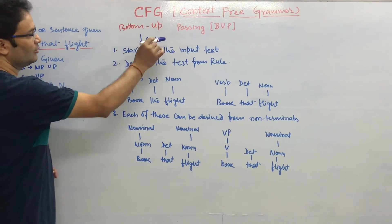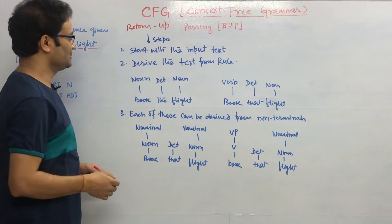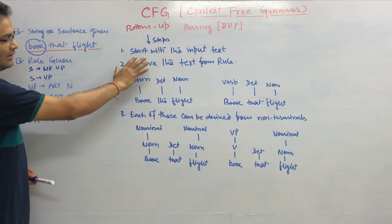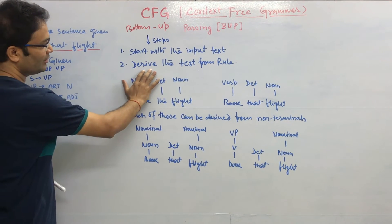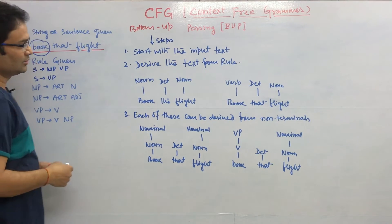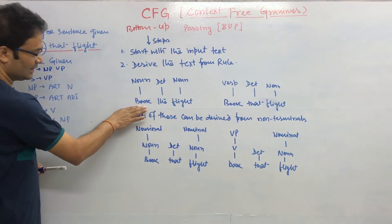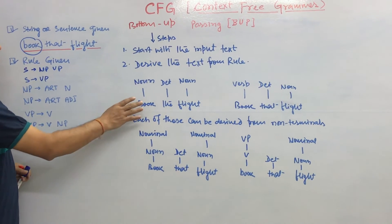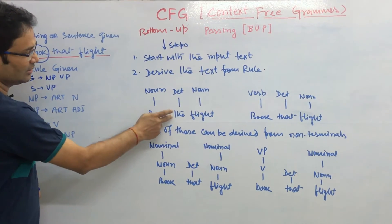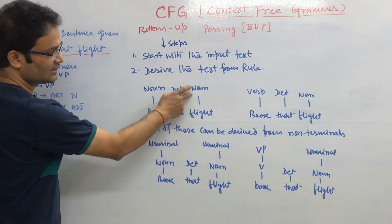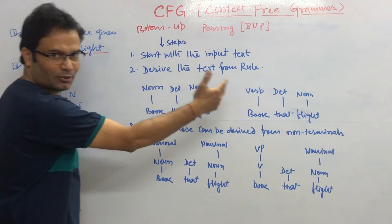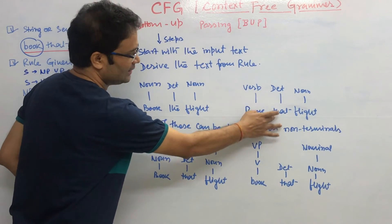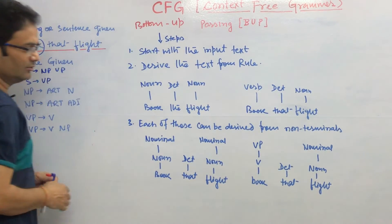Let me do the bottom-up approach. We have to take some few steps. Start with the given input sentence 'book that flight'. Now we have to derive the text from the rules, so this is my text 'book that flight'. As per the rules, we can just derive. Book is the noun, that is the determiner and the noun. And other possibilities would be there, book could be the verb and the determiner and the noun.